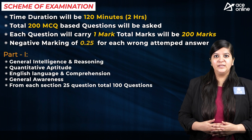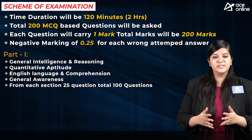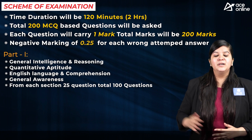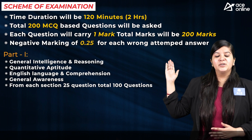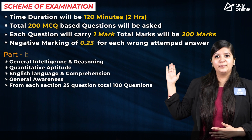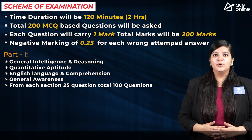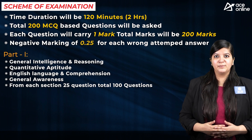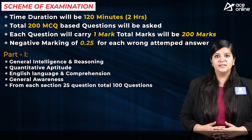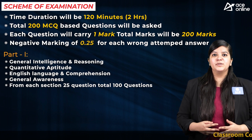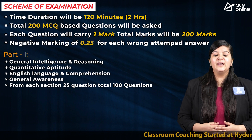The written test will have Part 1 and Part 2. In Part 1, questions will be from General Intelligence and Reasoning, English Language, Quantitative Aptitude, and General Awareness. There will be 25 questions from each section, each carrying one mark, for a total of 100 questions in Part 1.